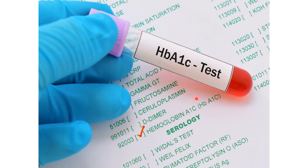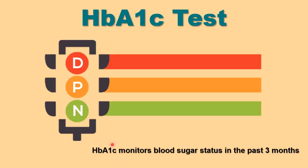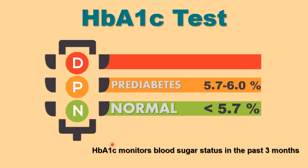Another important test is HbA1c, which does not require fasting — making it more convenient for patients and doctors, as it monitors glucose status over the past 3 months. The normal value for HbA1c is less than 5.7%. For pre-diabetes, it is 5.7 to 6%, while diabetic patients have HbA1c greater than 6%.